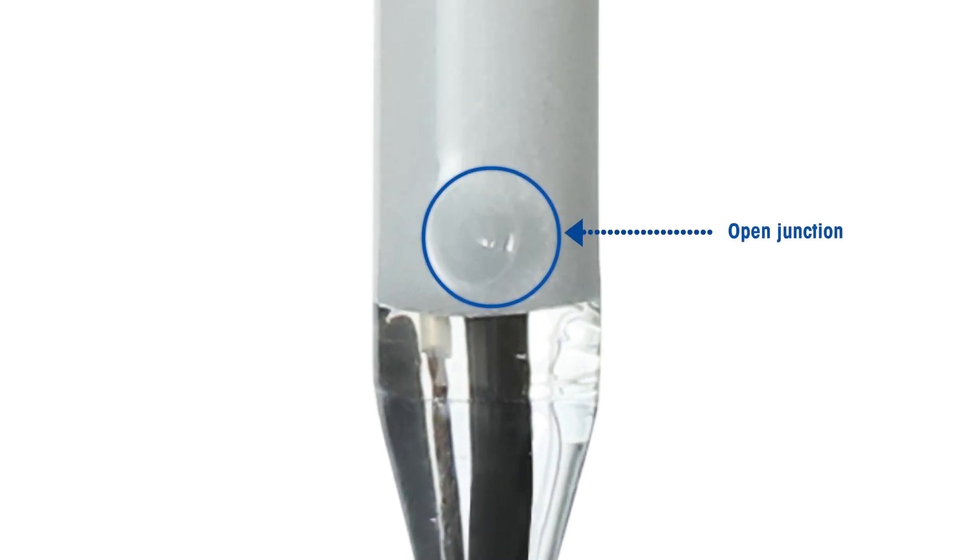The electrode has an open junction, which avoids clogging, and it's easy to clean.